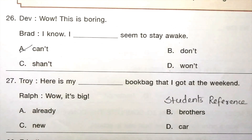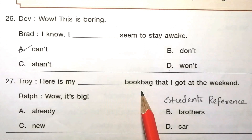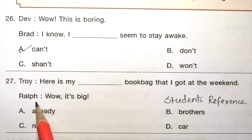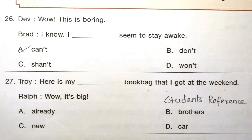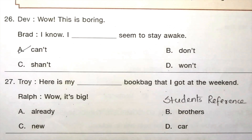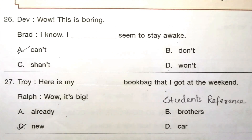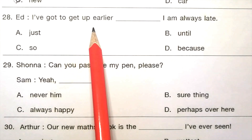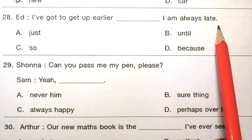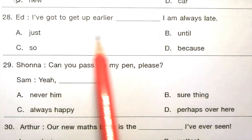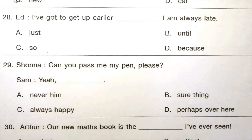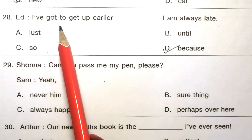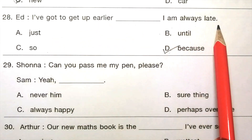Question 27: Troy: 'Here is my dad's dash book bag that I got at the weekend.' Ralph: 'Wow, it's big.' Options: already, brothers, new. The answer is C, new. 'Here is my new book bag that I got at the weekend.' Question 28: Ed: 'I have got to get up earlier, dash I am always late.' Options: just, until, so, because. The answer is D, because. 'I have got to get up earlier, because I am always late.'